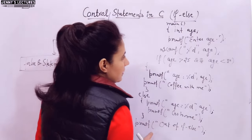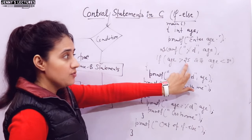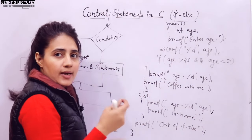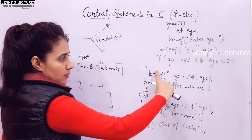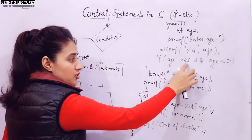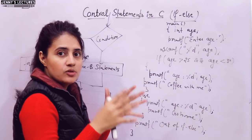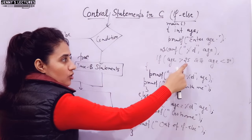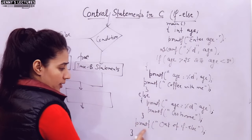In the program example, we enter an age. The condition checks if age is greater than 25 AND less than 30 — two conditions combined. If true (1), the if block executes: it prints the age and 'coffee with me'. If false, the else block executes: it prints the age and 'go home'. After the if-else block, one more statement outside it is printed.